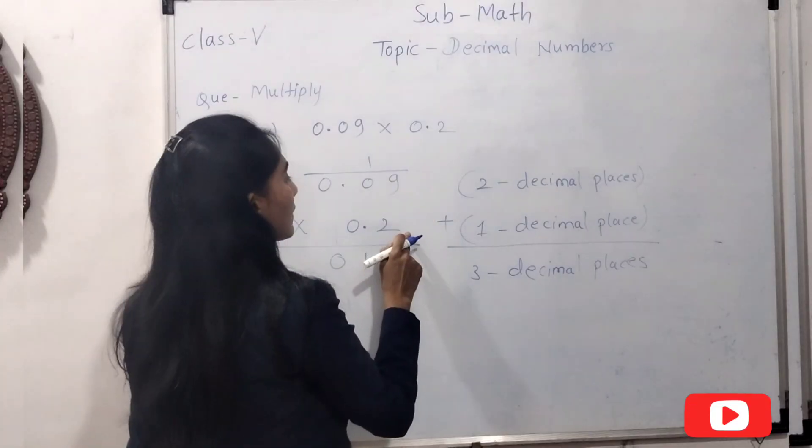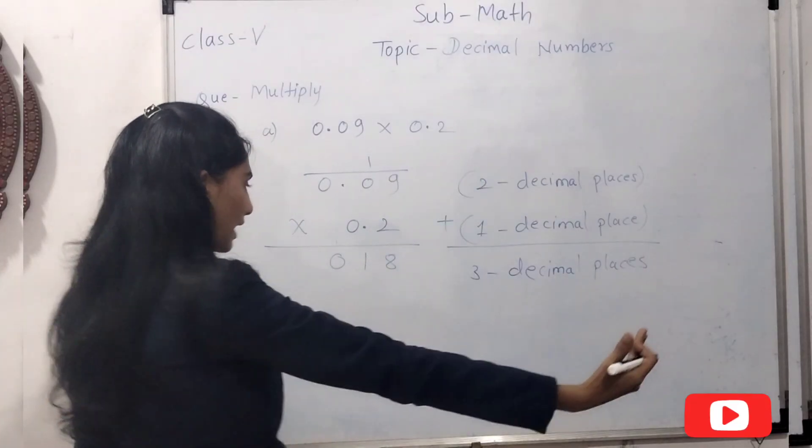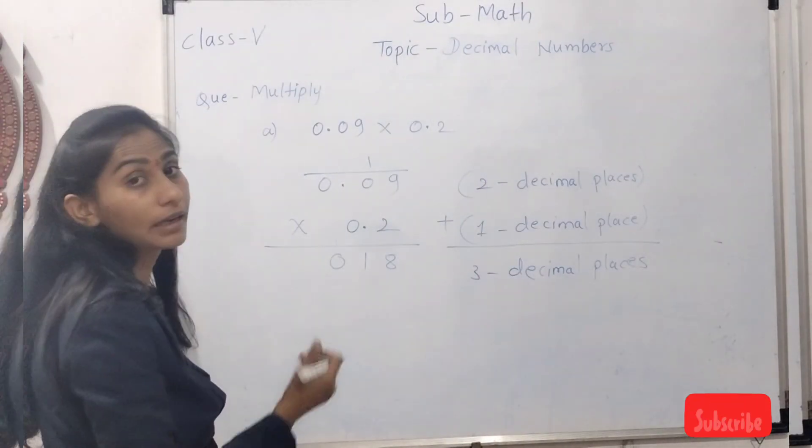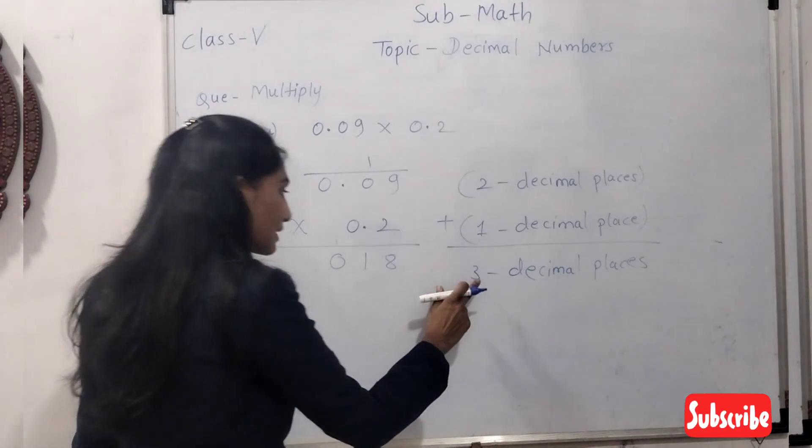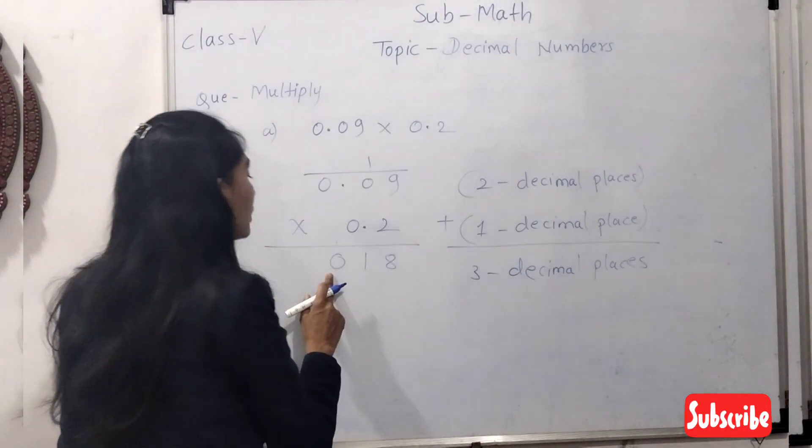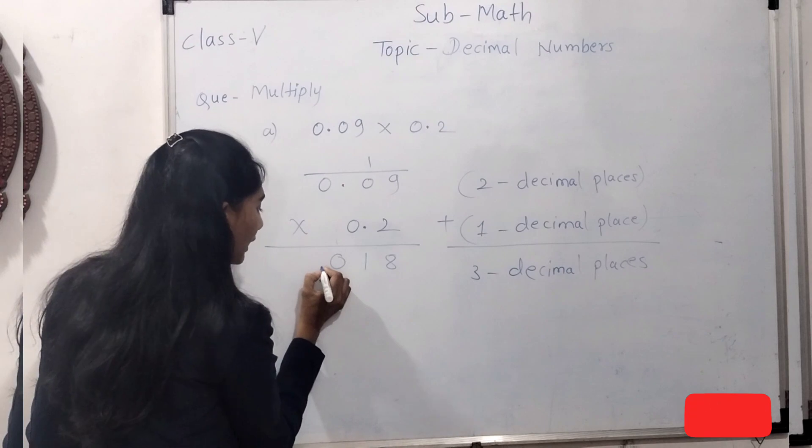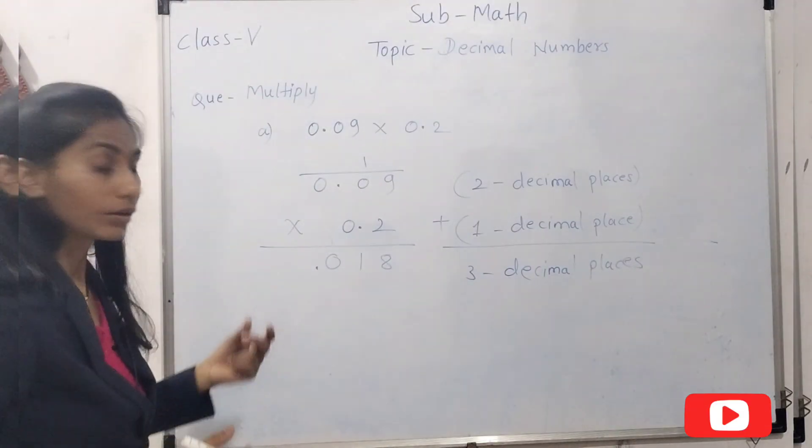Right side se start karna hai and same number of decimal places, means three decimal places hum count karengi aur uske aage hum point karengi. But here we need to put 0 because this 0 tells us about this number is less than 1.